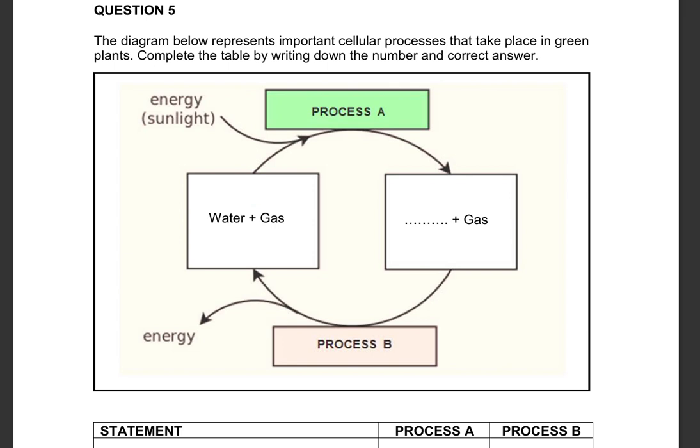So in this particular video, we are going to be answering question 5, which is based on the cellular processes, cellular respiration and photosynthesis. The diagram below represents important cellular processes that take place in green plants. Complete the table by writing down the number and the correct answer.